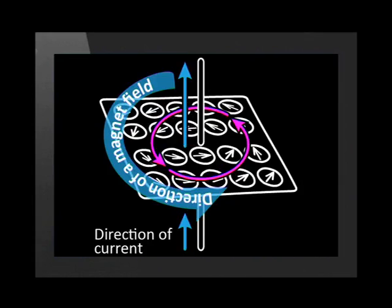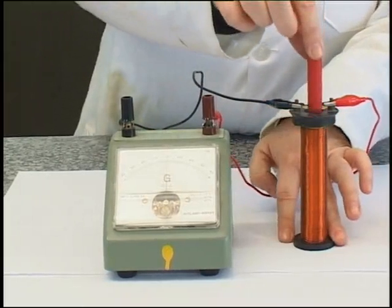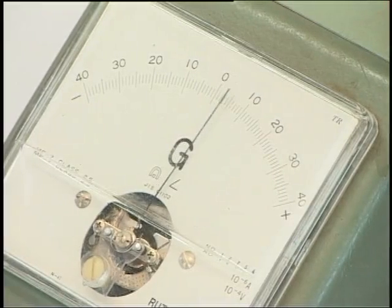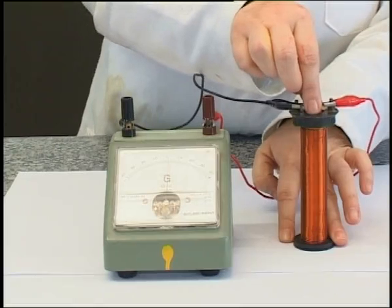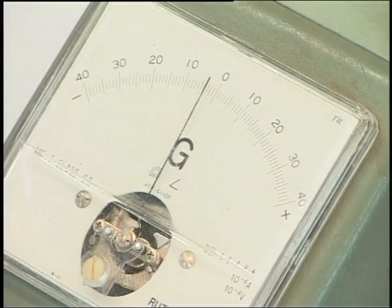But each time the magnetic field changes it creates an electric field. I'm going to move the magnet's north pole into the coil. As the coil feels the magnetic field increasing it generates a current. When I pull the magnet out the magnetic field passing the wires changes again and the current in the wire moves the other way.